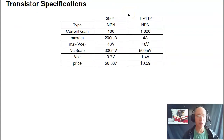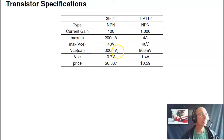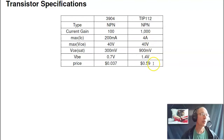The transistors you use depend on what you have available. We usually have the 2N3904 and TIP-112s in stock. The 3904s are 3.7 cents each — really cheap — and we burn out a lot of transistors, so at that price we don't really care. The limitation is it's only good for 200 milliamps. If I want more current, I switch to the TIP transistor, capable of up to 4 amps, but more expensive at 59 cents each.